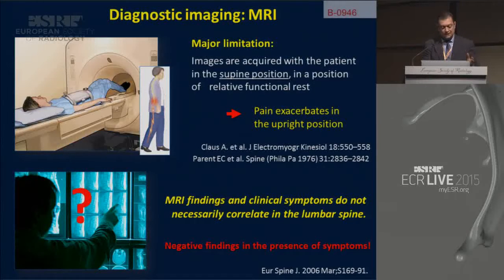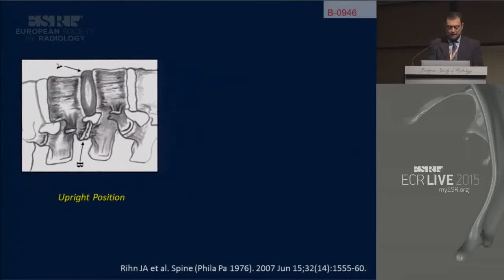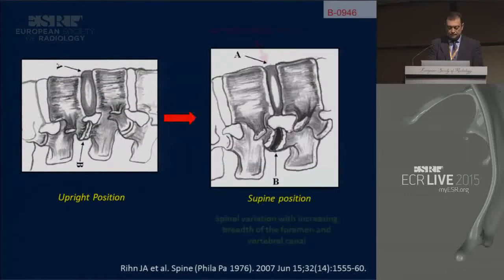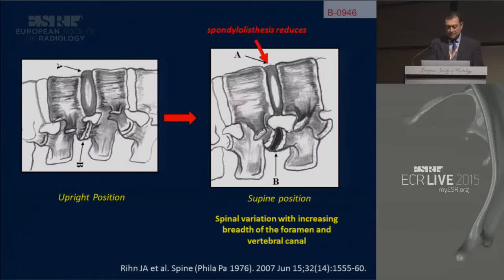We have negative findings in the presence of symptoms in the supine position. Here you can see the variation between upright and supine positions: a reduction of spondylolisthesis, a spinal variation with increasing breadth of the foramen and neural canal.